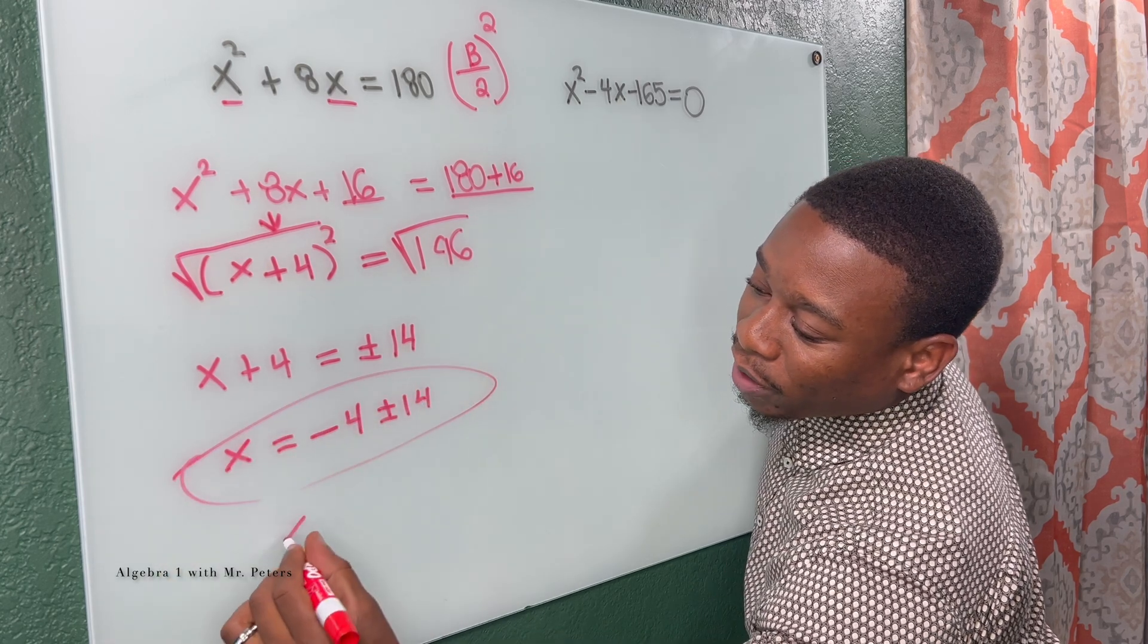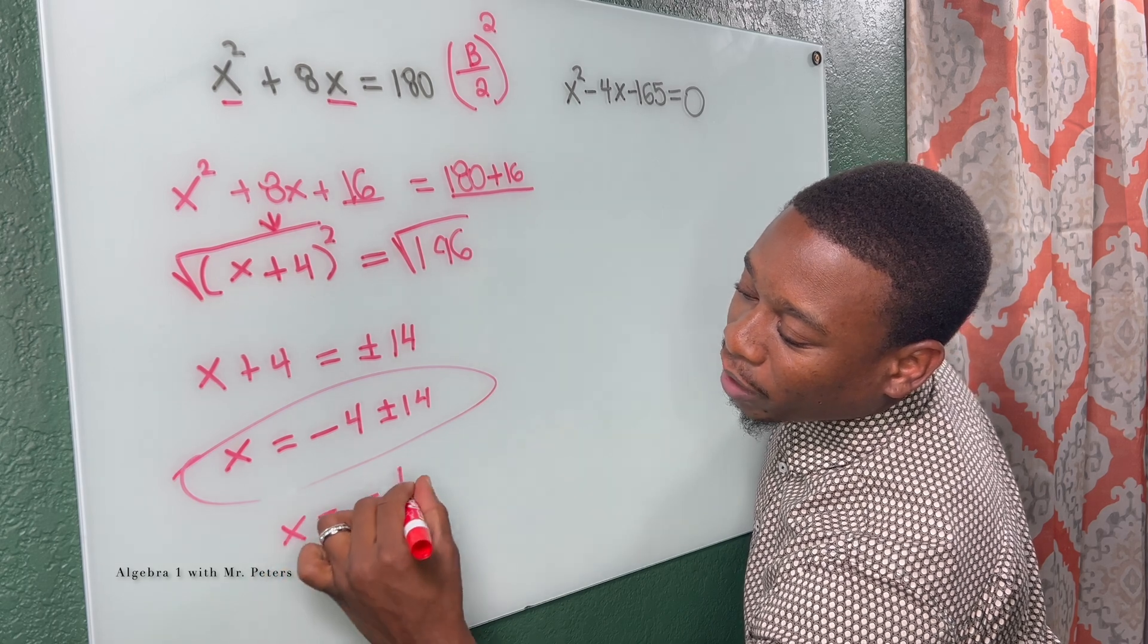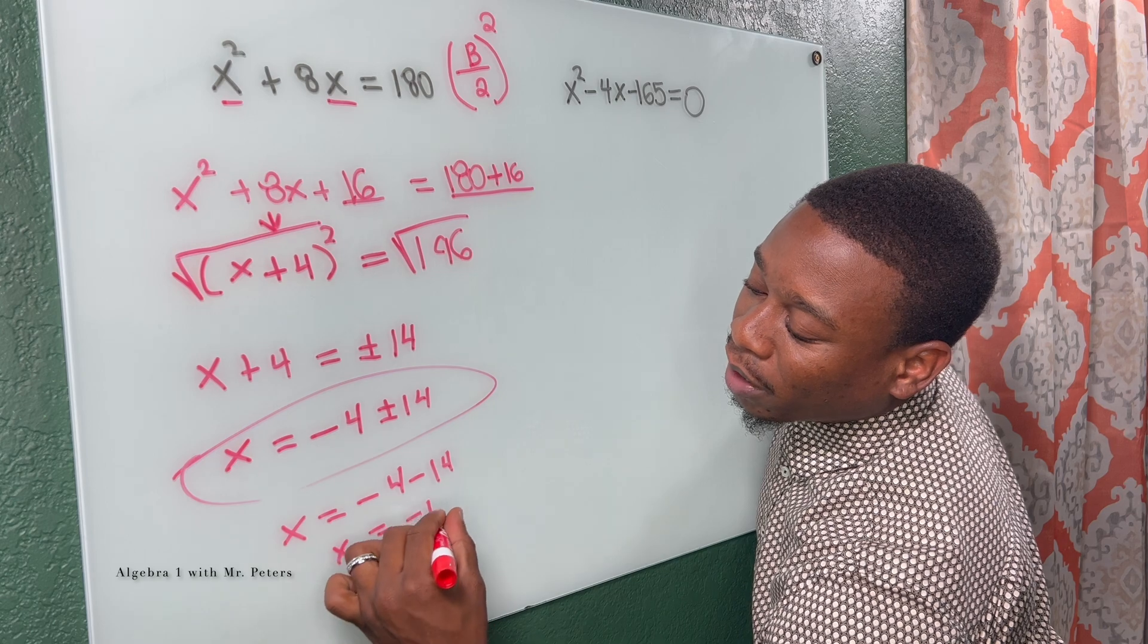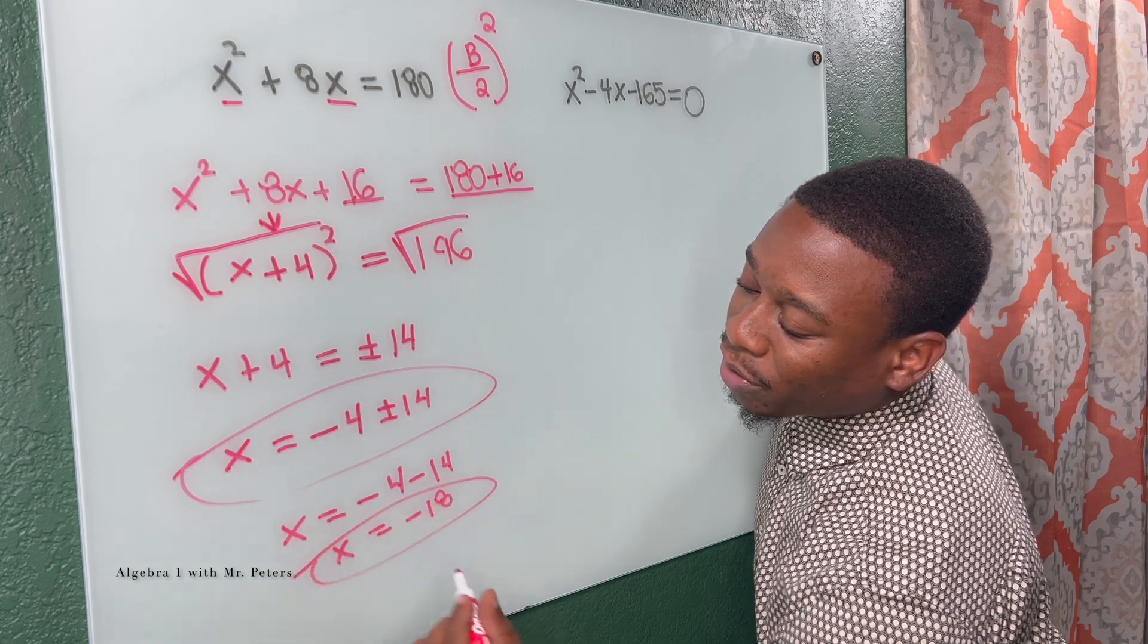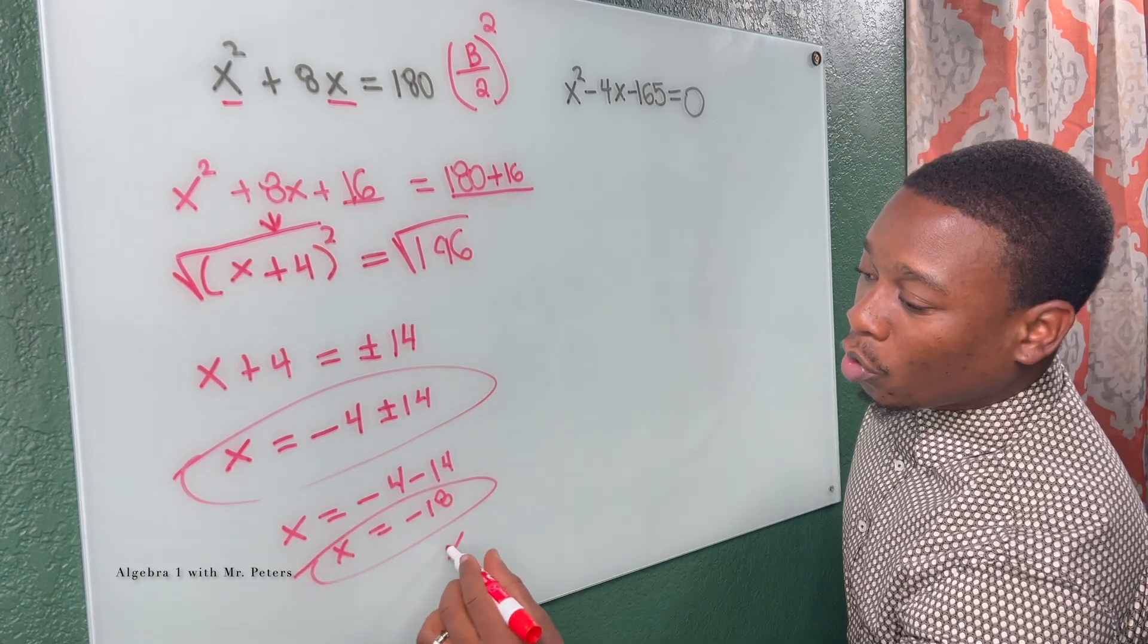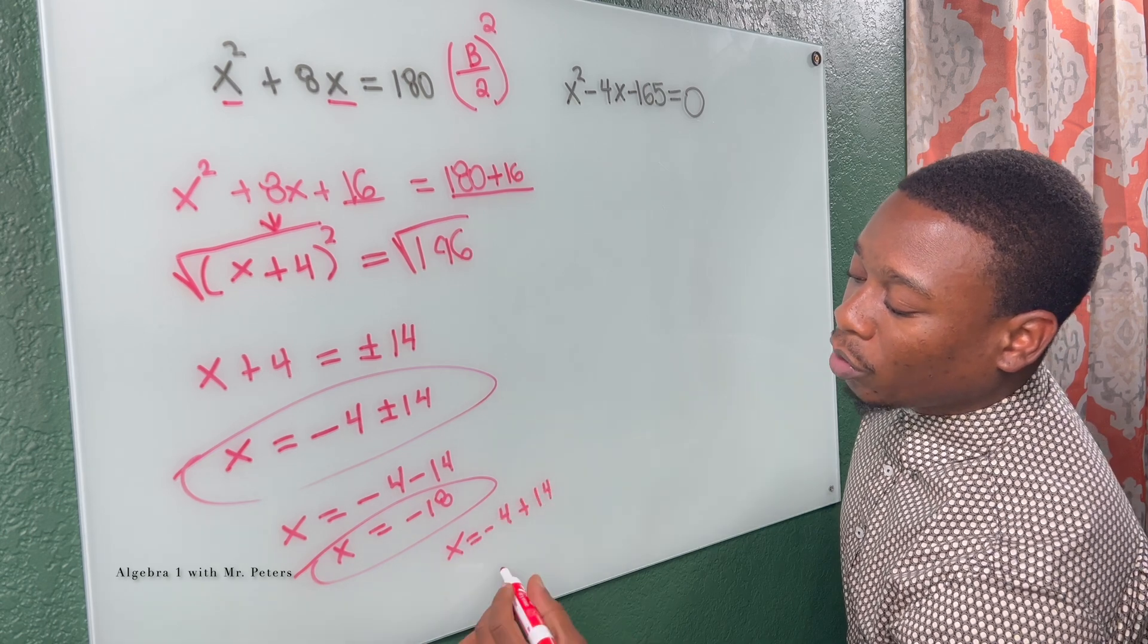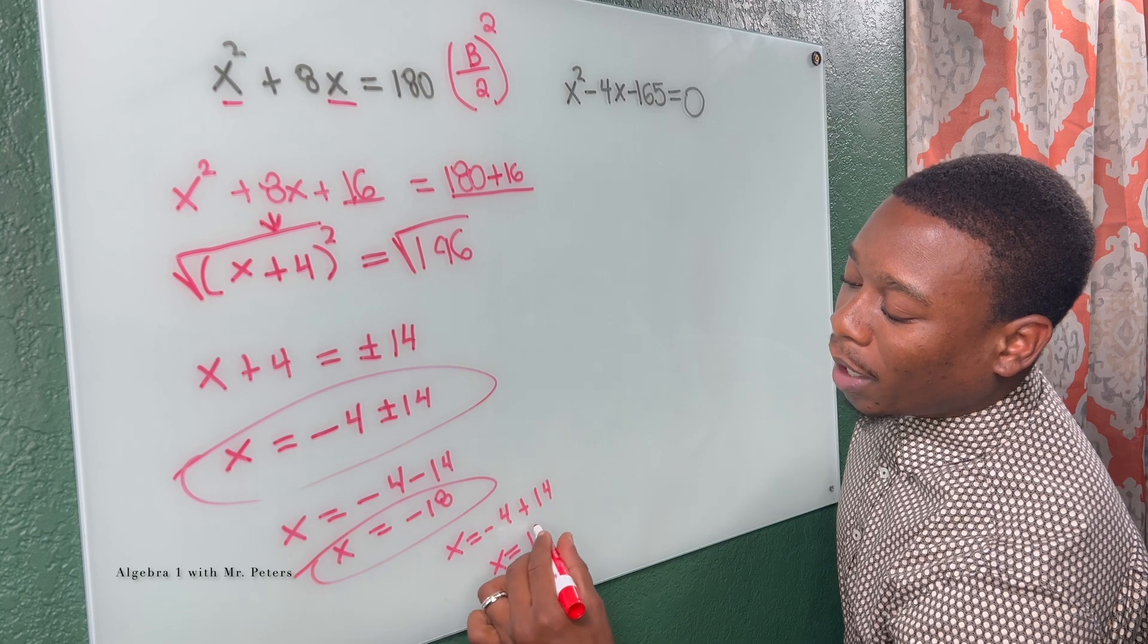So now to solve, we're gonna get X absolutely by itself. X is equal to negative four plus or minus 14. So now we separate these equations. X is equal to negative four minus 14, we know X is equal to negative 18. First answer. Second answer, X is equal to negative four plus 14, and X is equal to positive 10.